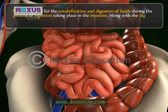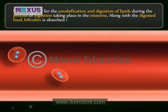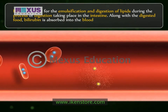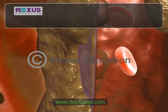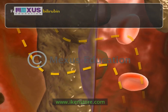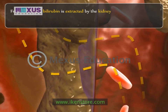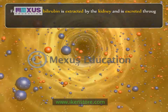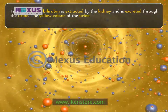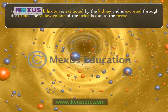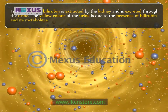Along with the digested food, bilirubin is absorbed into the blood from the small intestine. From the blood, bilirubin is extracted by the kidney and is excreted through the urine. The yellow color of the urine is due to the presence of bilirubin and its metabolites.